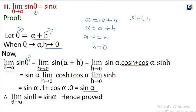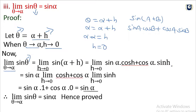We write sin theta as sin(alpha + x), which expands to sin alpha into cos x plus cos alpha into sin x. Now, limit as x tends to 0: sin alpha is a constant. Sin alpha times limit of cos x plus cos alpha times limit of sin x.